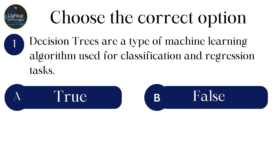Decision trees are a type of machine learning algorithm used for classification and regression tasks.